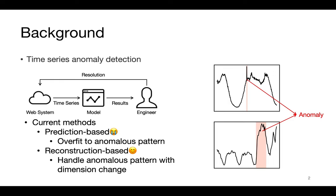Currently, existing methods for time series anomaly detection can be categorized into two main groups. Prediction-based methods often suffer from the issue of overfitting to anomalous patterns, especially in unsupervised settings.